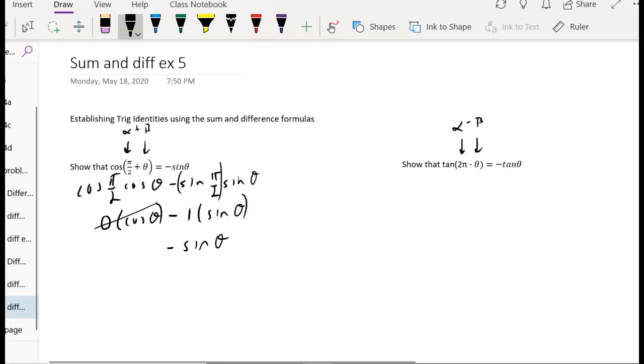So this is the same thing as the tangent of 2 pi minus the tangent of theta over 1 plus their product. So the tangent of 2 pi times the tangent of theta, and these are multiplied down here.